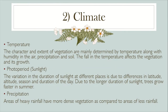Third is climate. Temperature: the character and extent of vegetation are mainly determined by temperature along with humidity in the air. Precipitation and soil also affect vegetation growth. Photo period refers to sunlight — the variation in the duration of sunlight at different places is due to differences in latitude, altitude, season, and duration of the day. Due to the longer duration of sunlight, trees grow faster in summer.